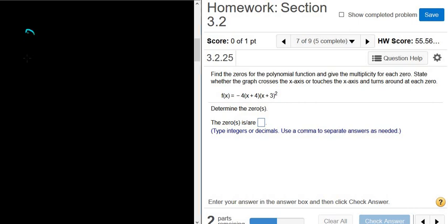Alright, looks like they're giving us a function, f of x, and it's equal to negative 4, parentheses, x plus 4, and then x plus 3, quantity squared.